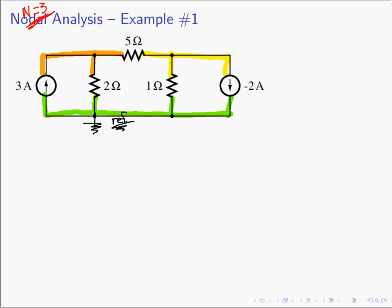Step three: define the n minus 1 node voltages with respect to the reference node. We define a voltage V1 with the plus polarity at node 1 and referenced to the reference node. The second node gets a voltage V2, also defined with respect to the reference node. So the reference node is what all the voltages are referenced against.